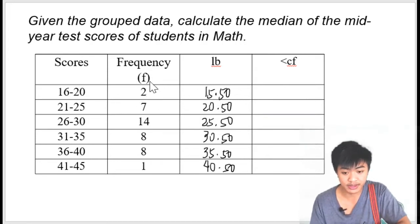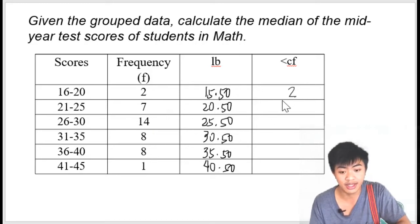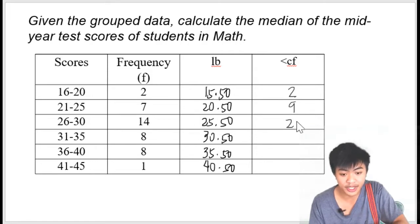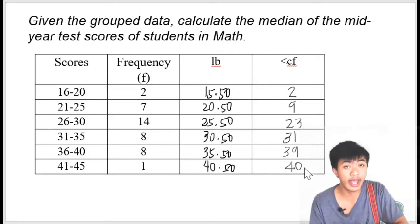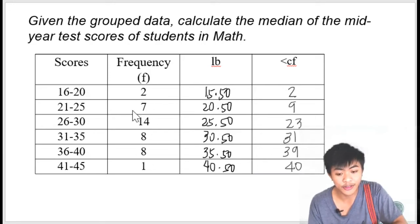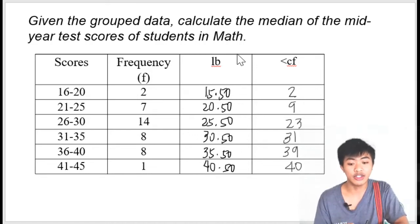So we copy the frequency of the lowest class interval — that's 2. And then you're going to add 2 to the next frequency: 2 plus 7 is 9, 9 plus 14 is 23, 23 plus 8 is 31, 31 plus 8 is 39, 39 plus 1 is 40. To know if your answer is correct, i-add mo lahat yung frequency — dapat yung sum ay 40. So na-fill out na natin yung lower boundary at saka yung less cumulative frequency.